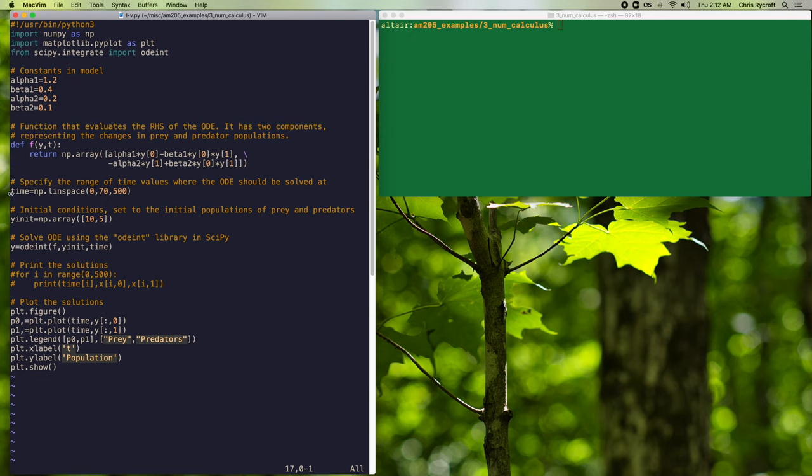And then a positive term due to predator-prey interactions. So we'll then define a time range that we want to integrate our ODE system over. And here, we'll integrate from 0 to 70 in non-dimensionalized units. And we also want to get back 500 samples of our ODE solution. And we'll define that here.